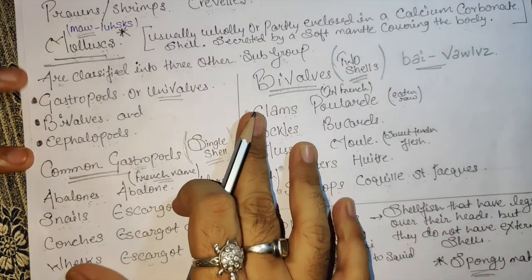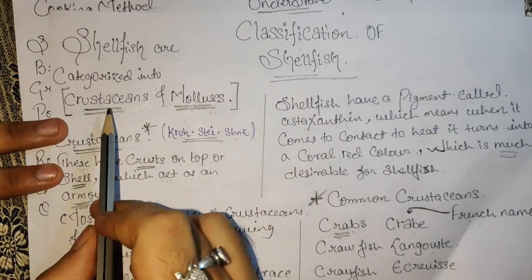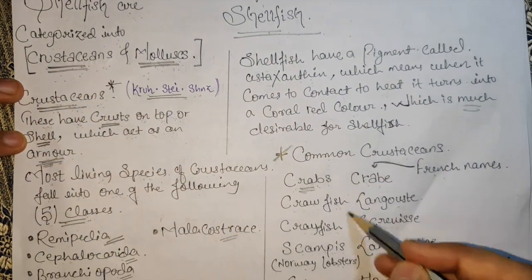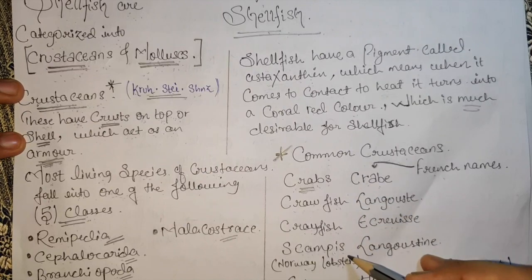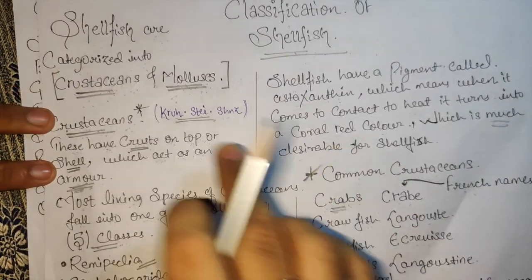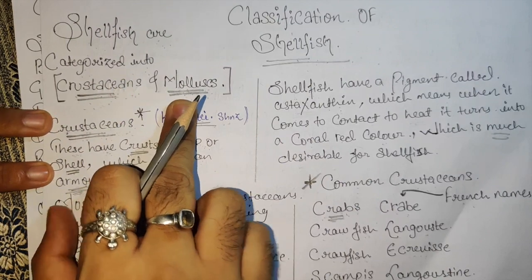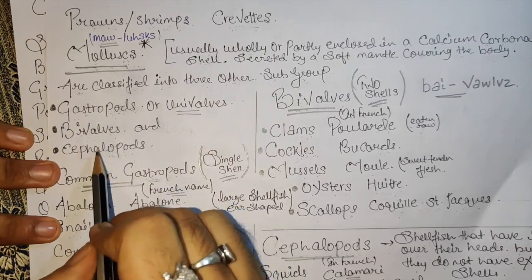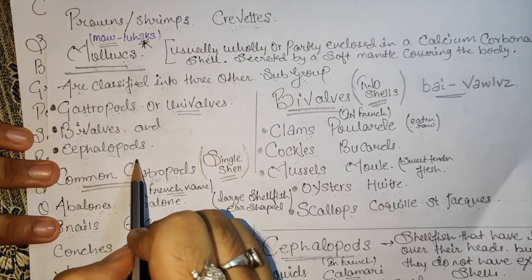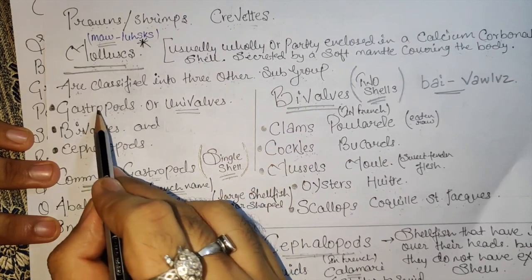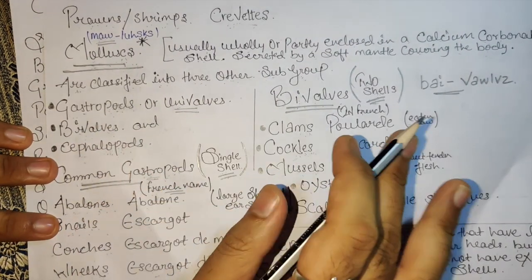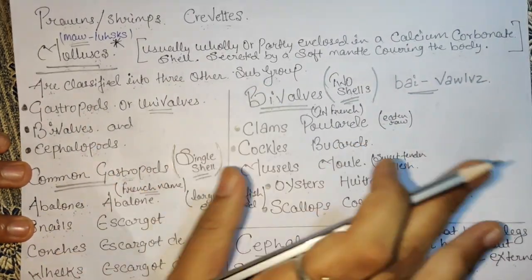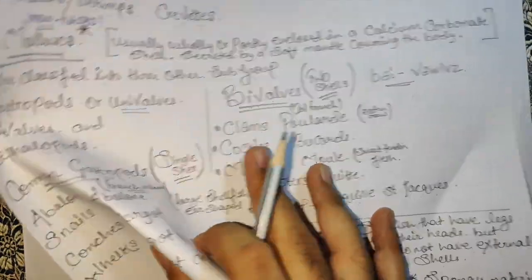These three things are very important. In molluscs, remember: gastropods have a single shell, bivalves have a double shell, and cephalopods have no shell. As a chef, if you remember all these things, it's enough. So this was our shellfish classification.